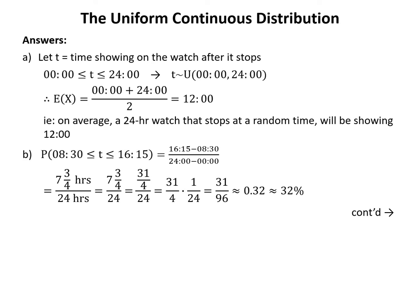The time between 8:30 and 16:15 is 7¾ hours. Dividing by 24 gives 7.75/24 = 31/4 ÷ 24 = 31/96, which rounds to approximately 0.32 or 32%.